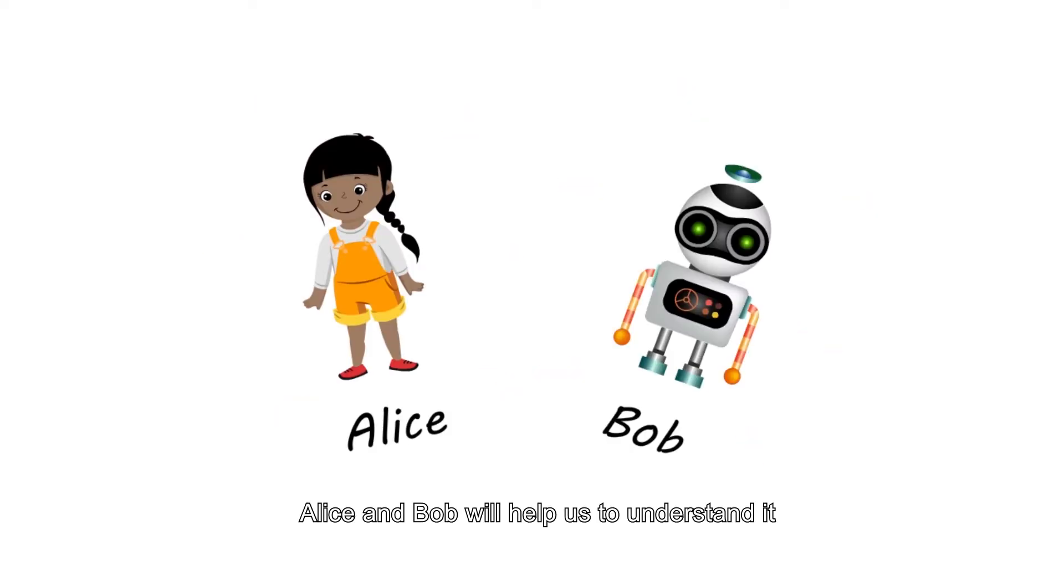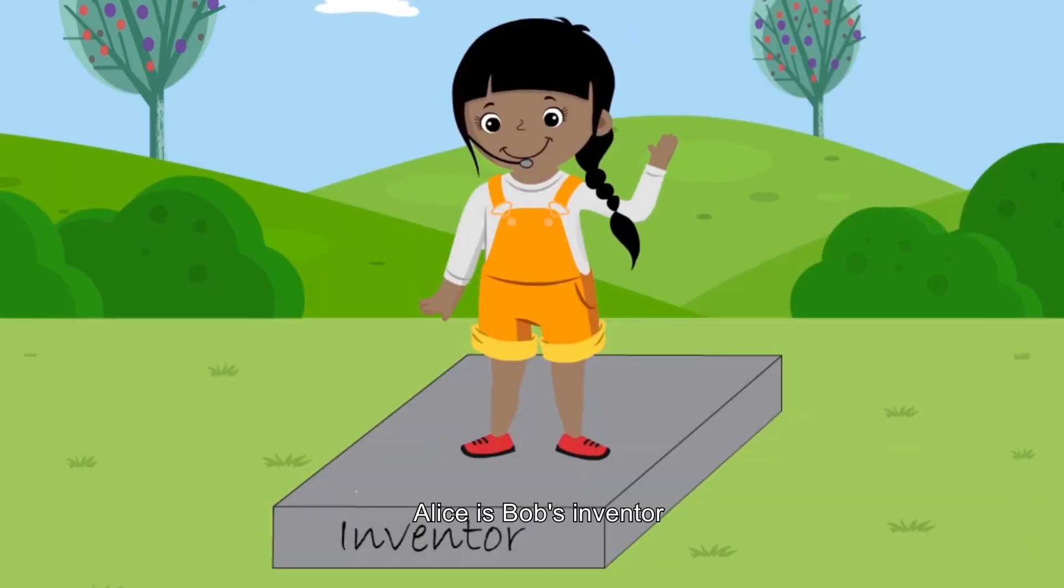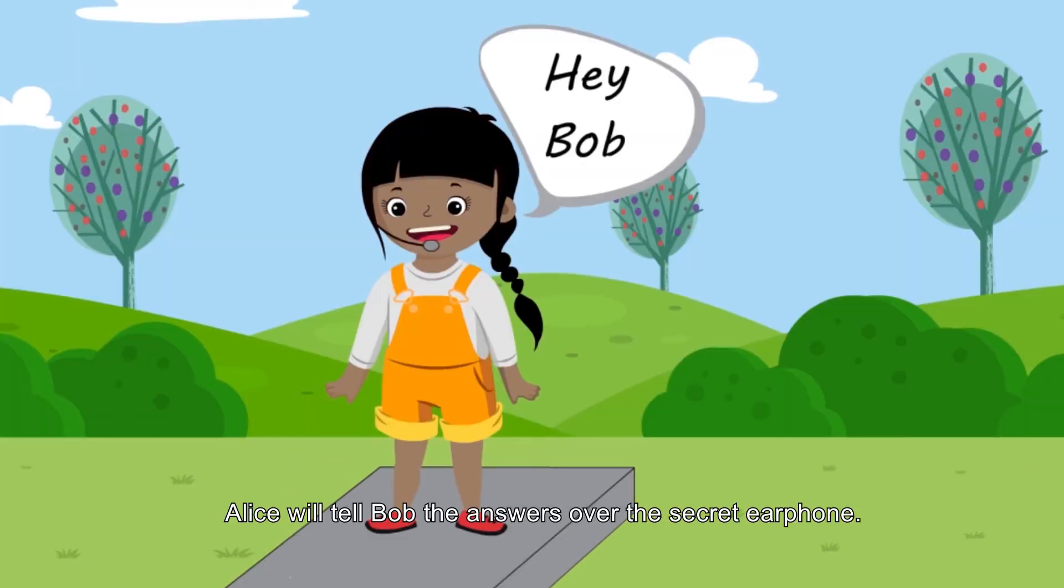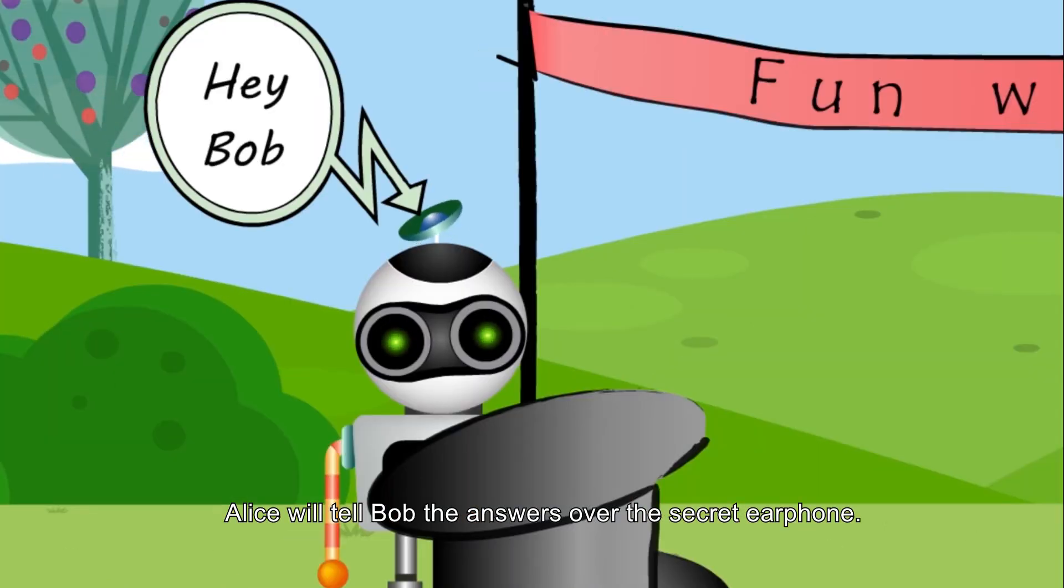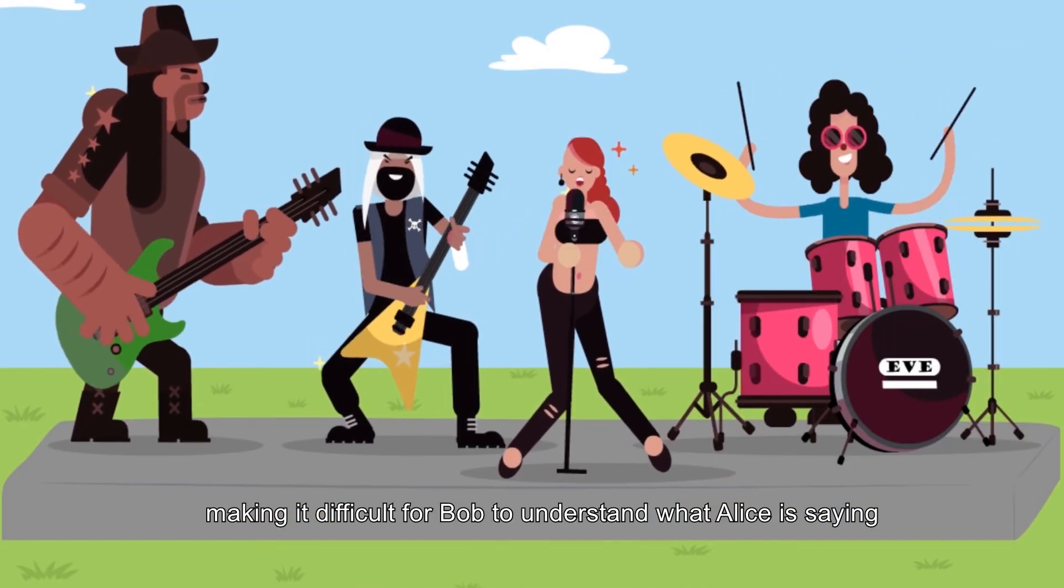To make it more interesting, Alice and Bob will help us to understand it. Bob is the first robot participating in a TV show to prove his artificial intelligence. Alice is Bob's inventor. She knows Bob is not as good as she claims. To win the prize, Alice will tell Bob the answers over the secret earphone. However, the band Eve is playing in the show and is making a lot of noise, making it difficult for Bob to understand what Alice is saying.